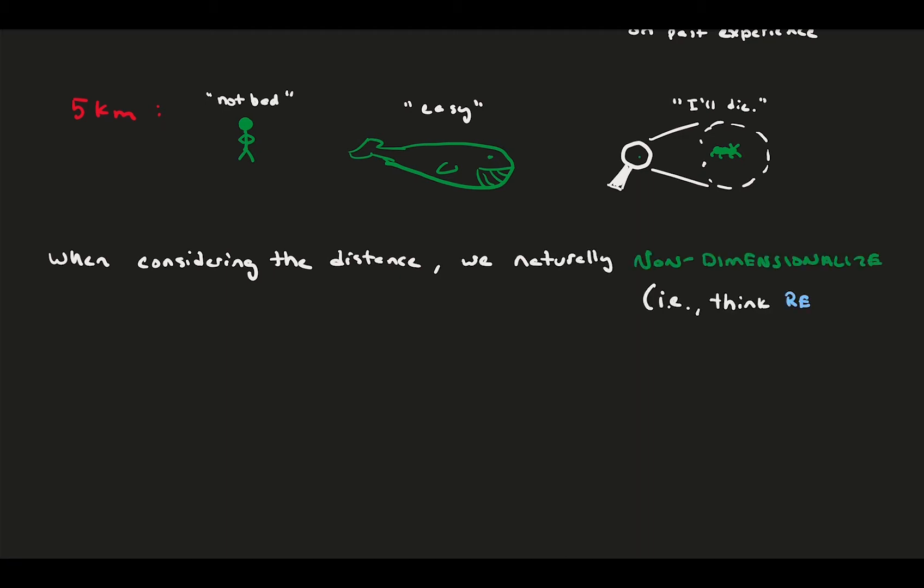However, if we zoom in on an ant and propose a 5K, they probably won't be happy about it. So, when considering the distance for these three organisms, we naturally non-dimensionalize and think of the problem relative to something important to that animal, like their body length. Here, let's designate a non-dimensional distance as d star sub 1, which is the travel distance divided by the body length. Instead of thinking of 5K as a raw distance, we think of it in terms of how many body lengths we've gone.